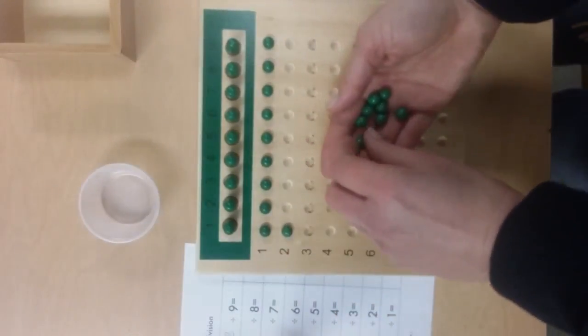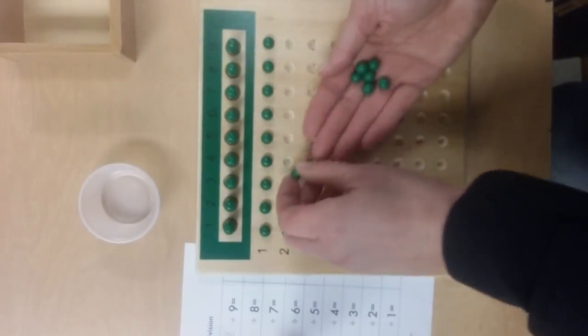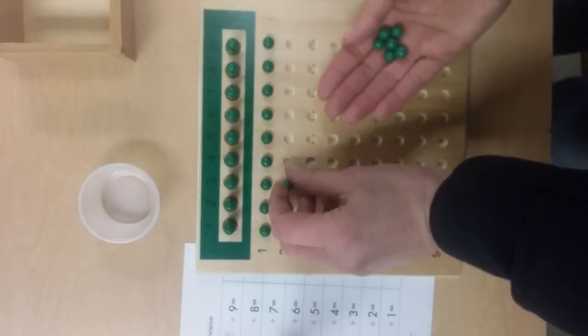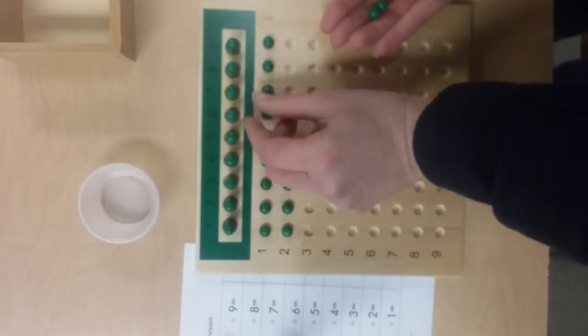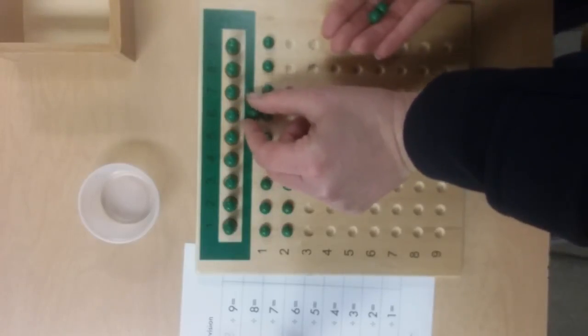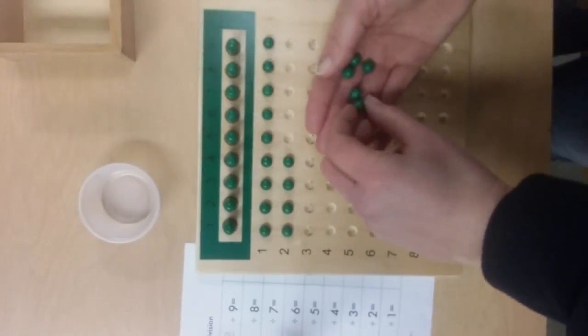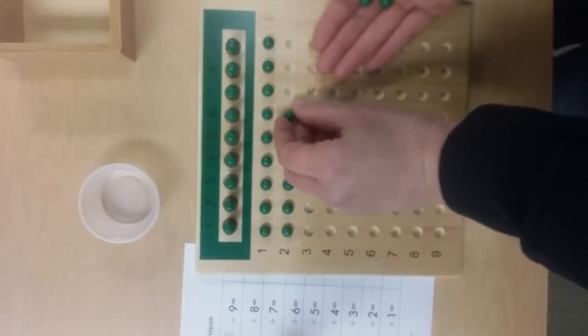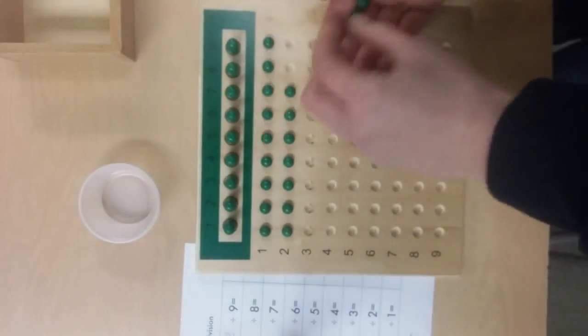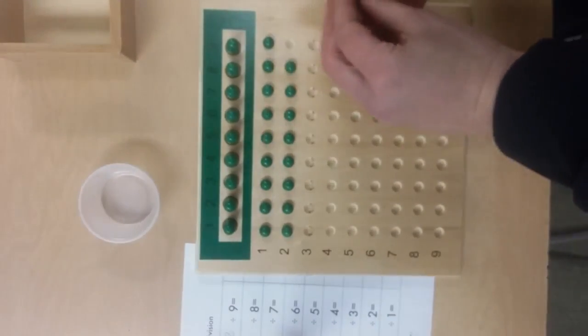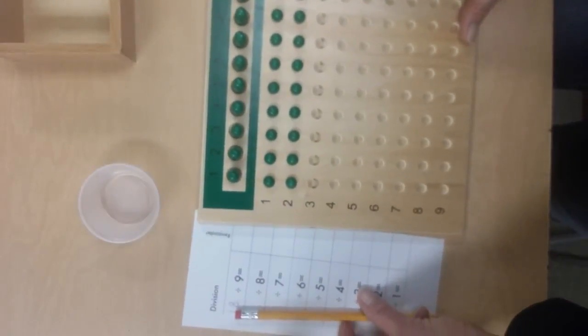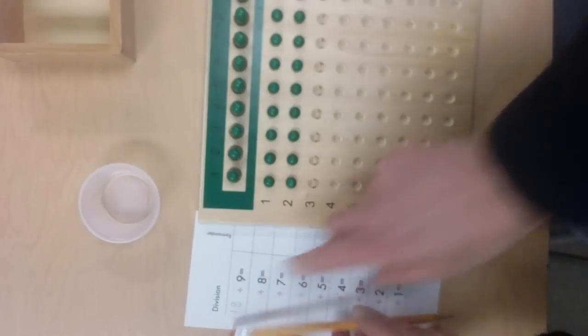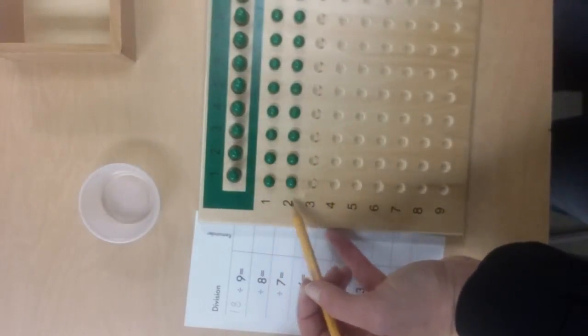Each skittle gets another. This is also a great way to see who has good fine motor skills. Once they're all distributed and there's none left over, the answer is how many rows there are. There are two rows, so the answer is 2. So 18 divided by 9 equals 2.